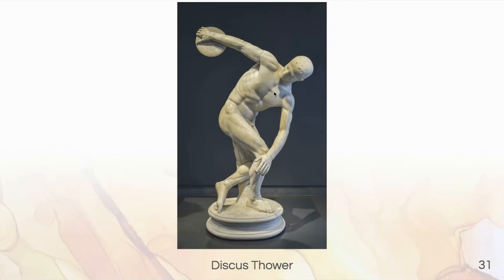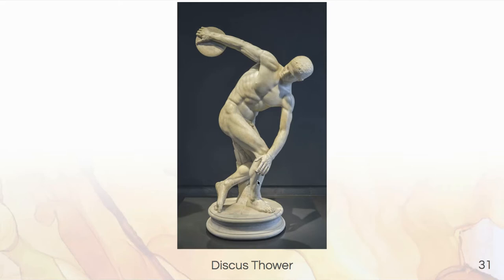This Discus Thrower is absolutely unbelievable — you can see him in complete arrested motion. Besides the incredible physique — which you'll notice especially in Greek and Roman statues, where male physiques were overly muscled — look at how beautiful the arrested motion is. The weight rests on the forward leg, the other leg is bent and turning, even the toes are curling under. If you've ever watched a discus thrower in real life, this is an accurate depiction.